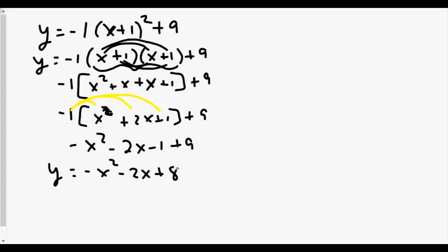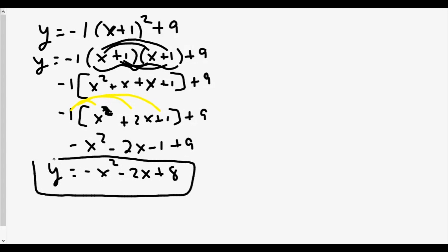This is now the standard form of our parabola, originally given in vertex form. From here, we can identify our A value as negative one, our B value as negative two, and our C value as eight — to find our discriminant.